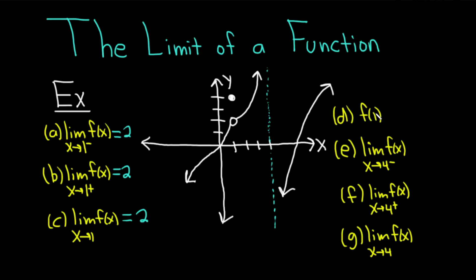Part d wants us to compute f of 1. That's basically the y value when x is 1. If we go to 1 on the graph, we can see that the y value is 4. So f of 1 equals 4.